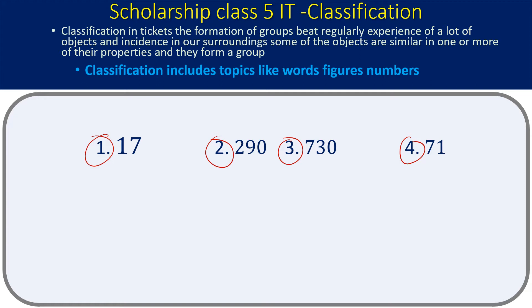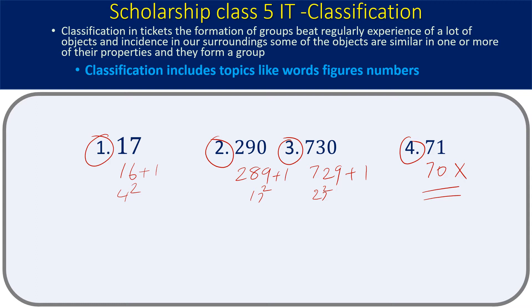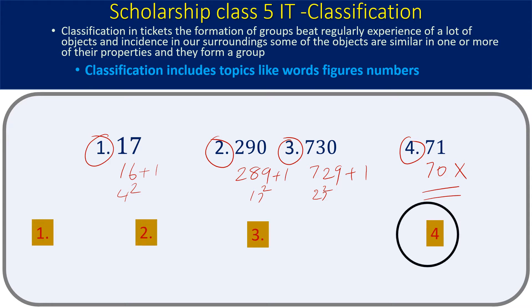The key is to recognize that 289 is 17 squared, 729 is 27 squared, and 16 squared is 256 — but wait: these are all perfect squares. 289 = 17², 729 = 27², but 70 is not the square of any number. So 70 is the odd one out. The answer is the fourth option. This was considered a medium difficulty question.